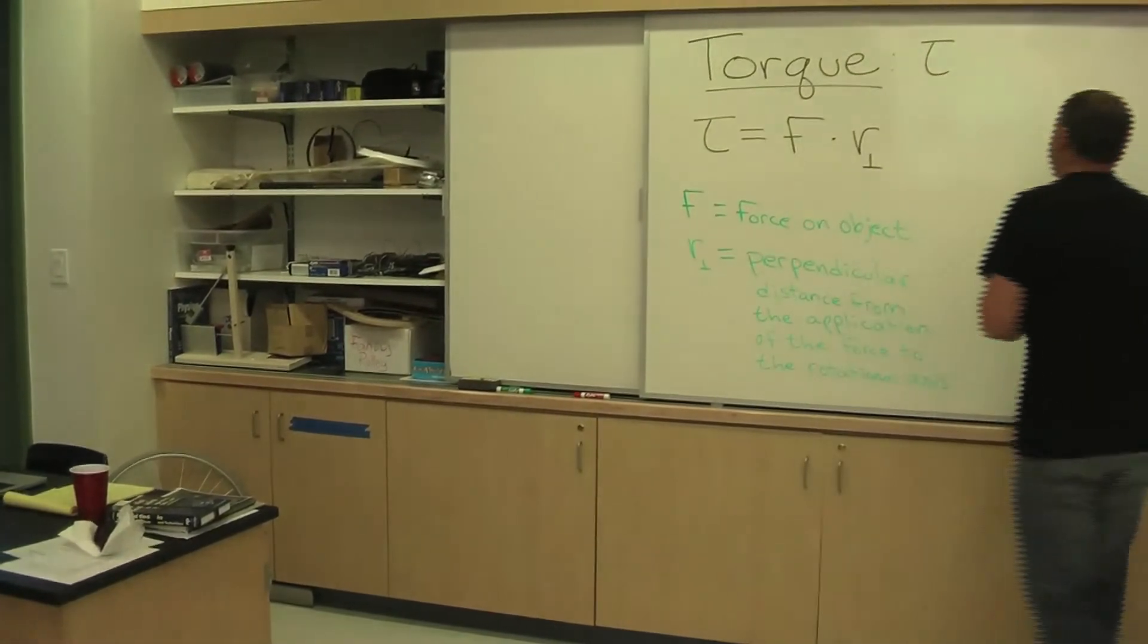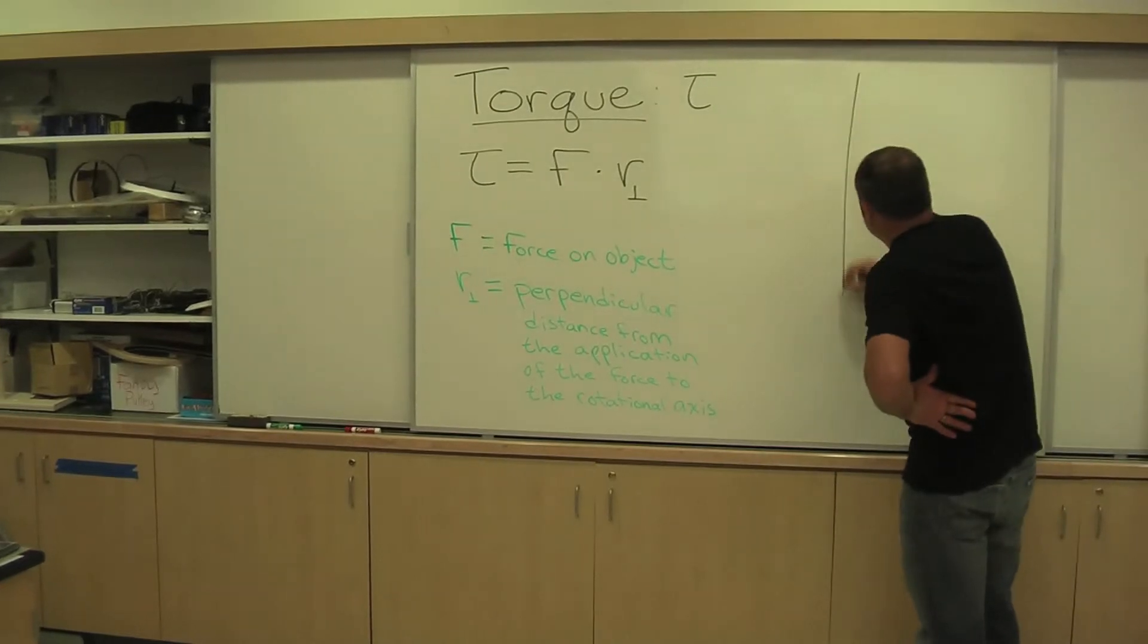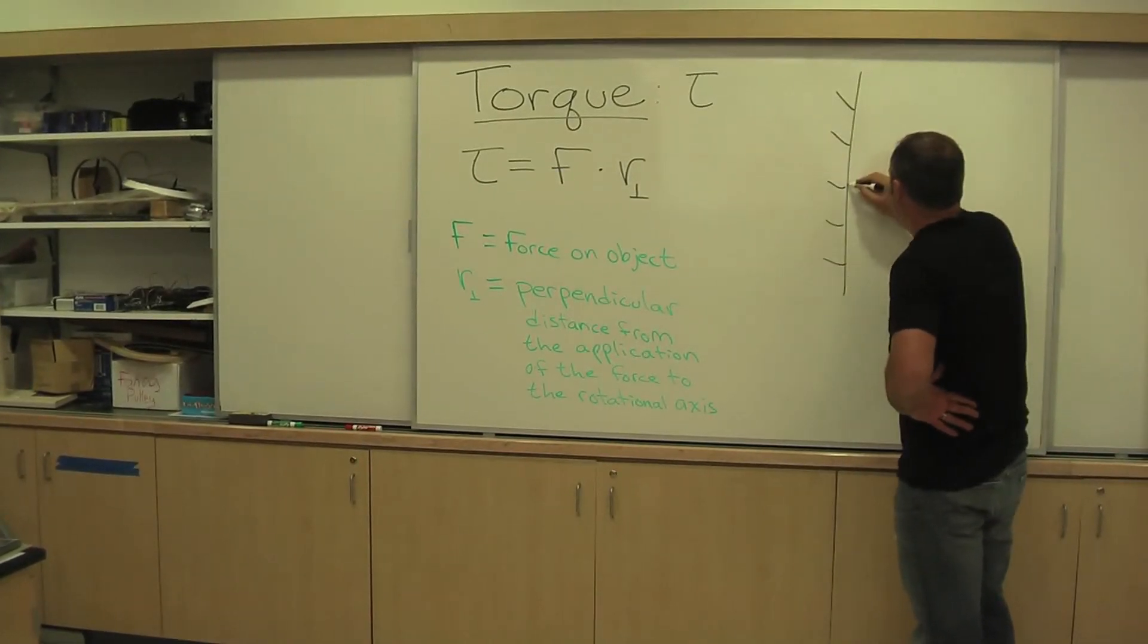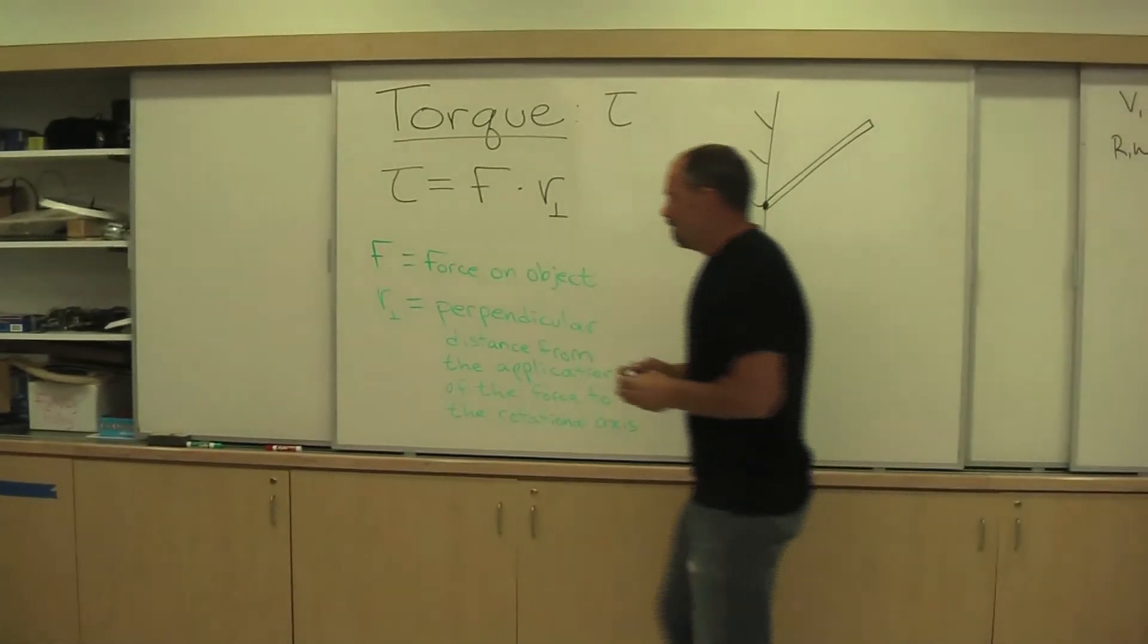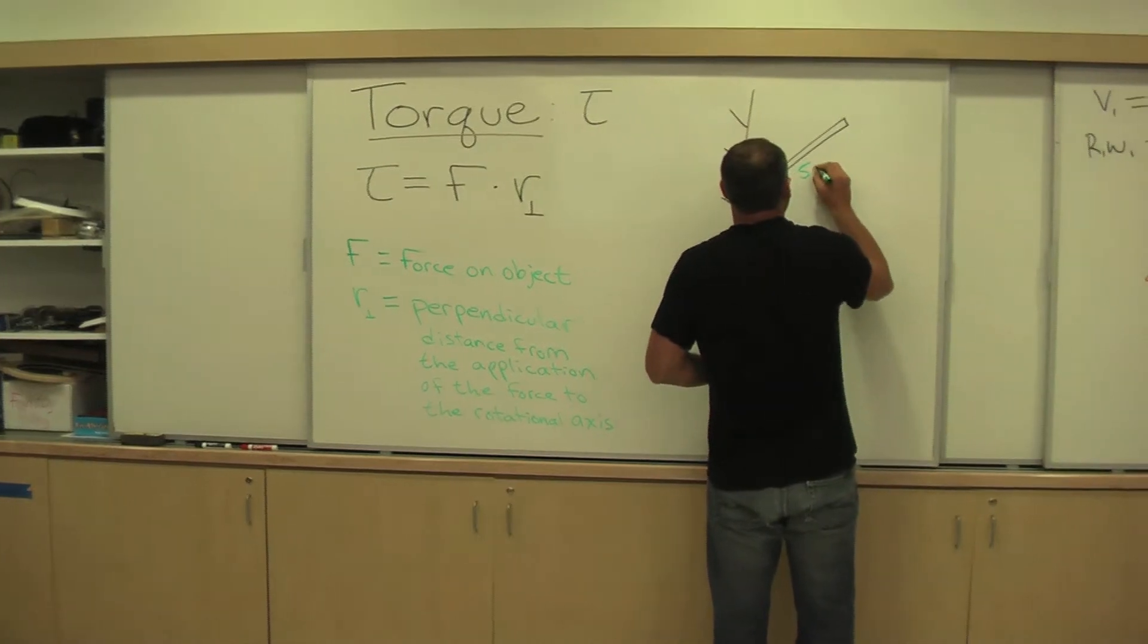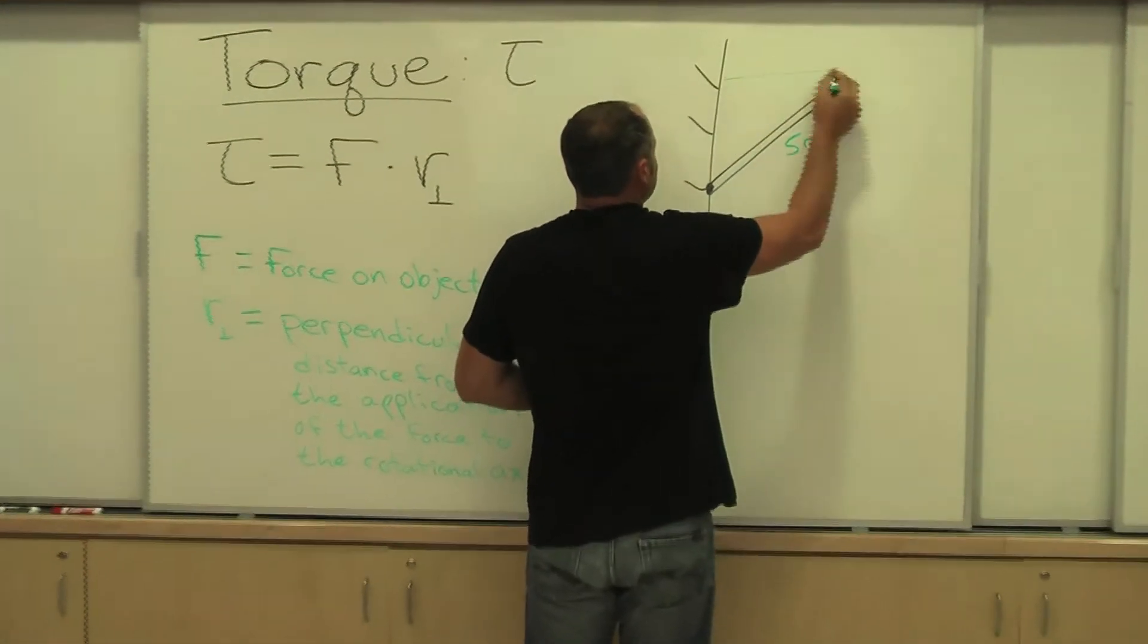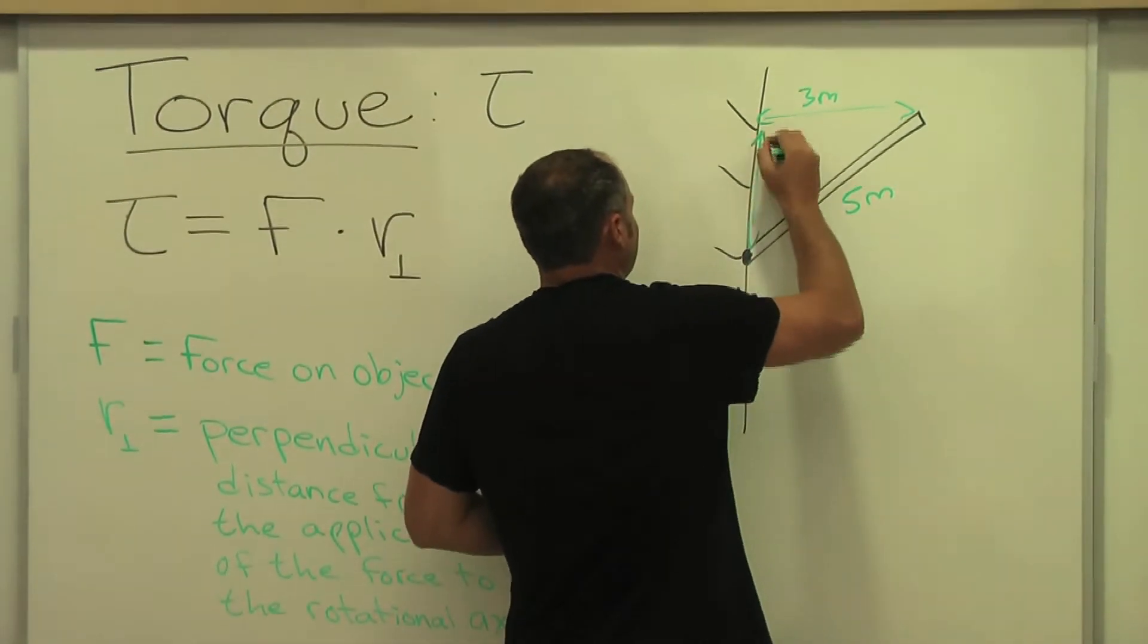One other example is what about if you're at an angle? So say, for example, well, let's just make a wall here. And let's put something up like this and say it's pivoted right here. Well, we can add some numbers. Let's say this is 5 meters. And we'll say this distance here is 3 meters. That distance there is 4 meters.